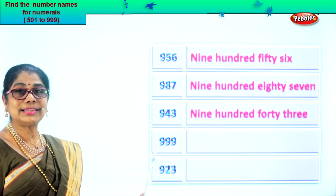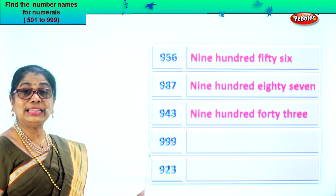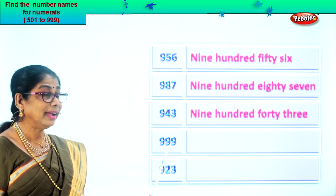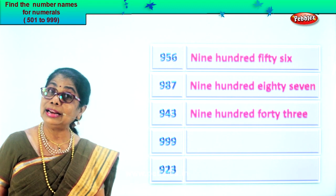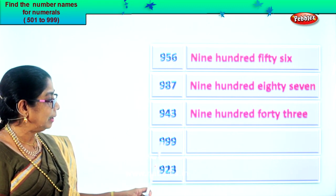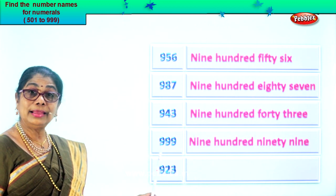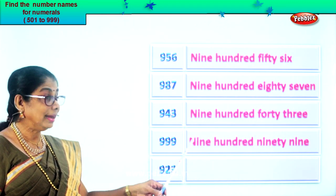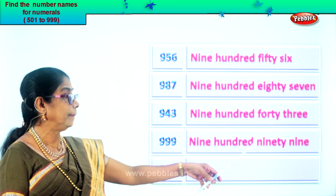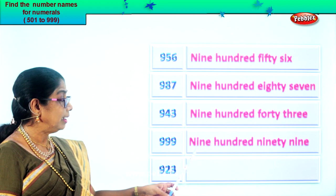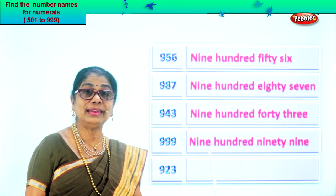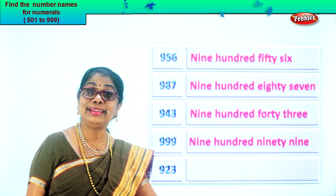Let's take the next number. What we have is nine, nine, nine. Nine in the ones place, nine in the tens and nine in the hundreds place. Let's read the numeral: nine hundred ninety-nine. So first we write nine, then we write hundred, then we write ninety-nine. Nine hundred ninety-nine.